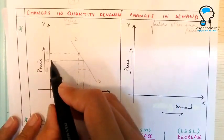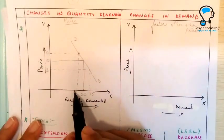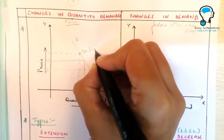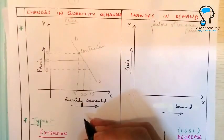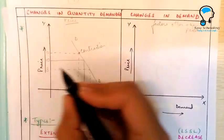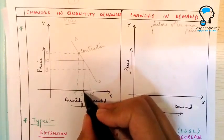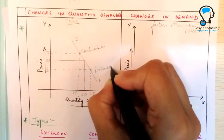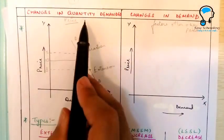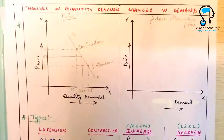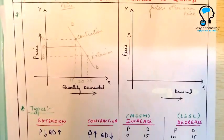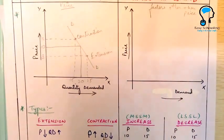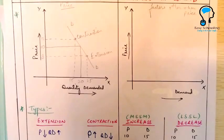When due to increase in price there is a decrease in demand, this is called contraction in demand. And when due to decrease in price there is an increase in demand from 20 to 25, this is called extension in demand. So changes in quantity demanded are of two types: extension and contraction. Extension is when price decreases and quantity demanded increases, and contraction is when increase in price brings a decrease in quantity demanded.